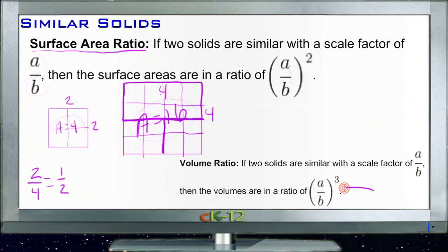Volume works exactly the same way, except that with volume you have a third dimension. So if the sides, if the solids are similar and they have a scale factor of say two to one, then the volumes are going to be in a ratio of eight to one because it's cubed.